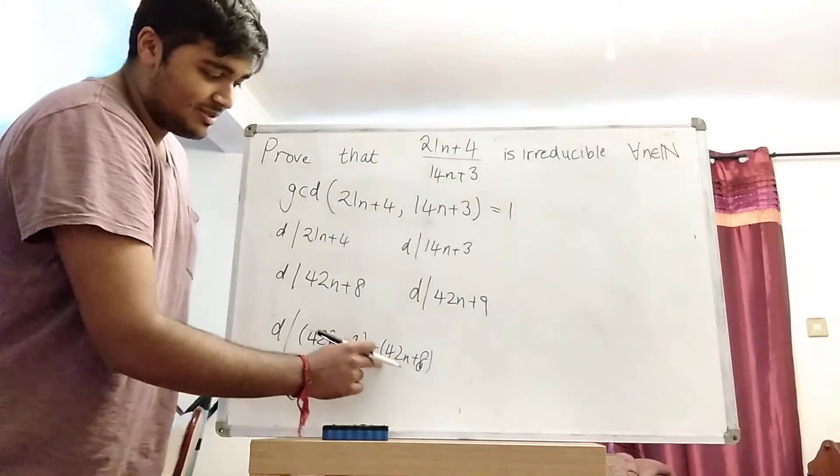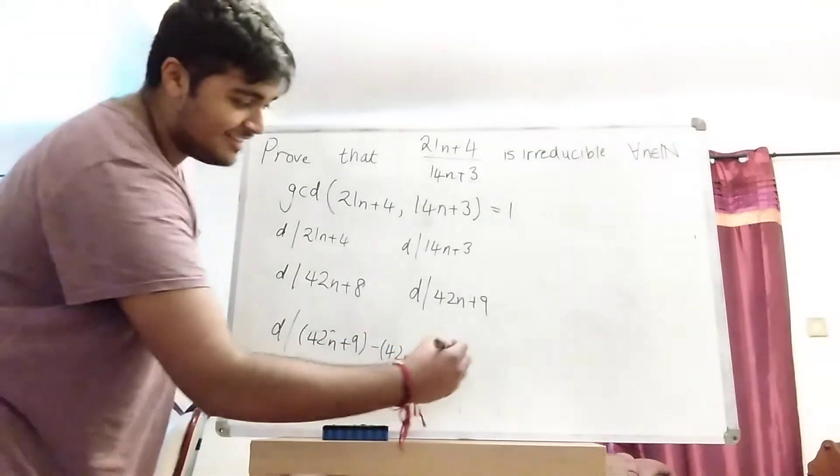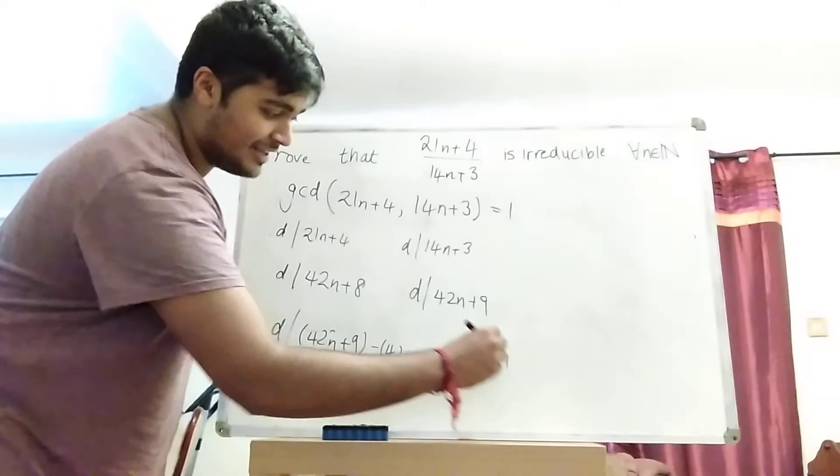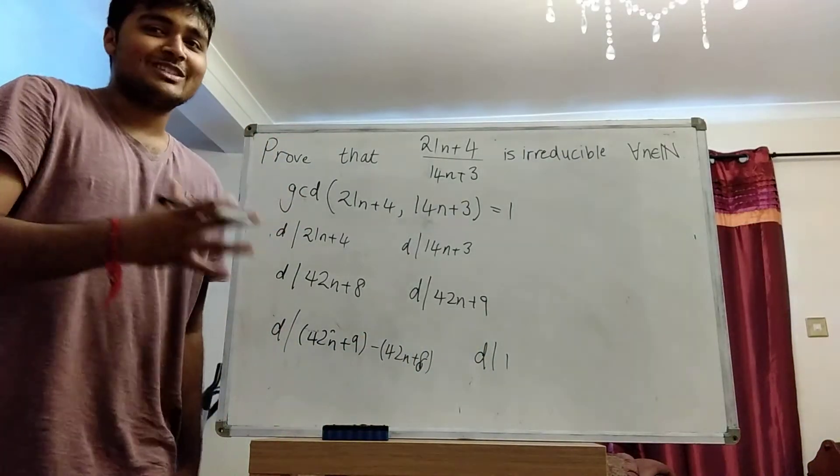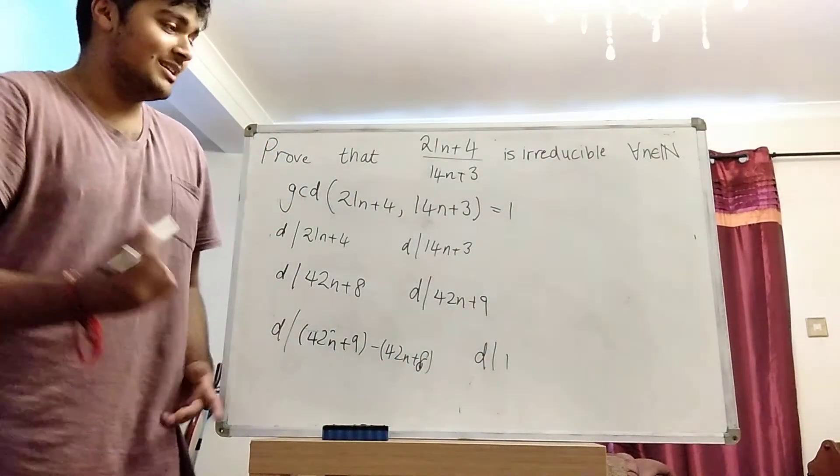But obviously the 42n's cancel and I'm just left with 9 minus 8. So I have D divides 1. But D is a positive integer, so it must be that D equals 1.